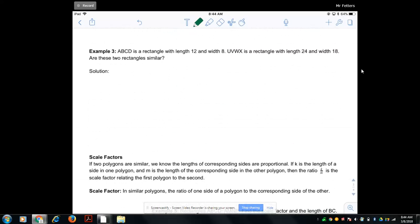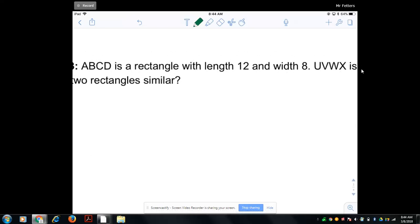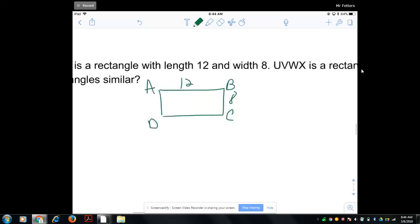Example number three. ABCD is a rectangle with length 12 and width 8. UVWX is a rectangle with length 24 and width 18. Are these two rectangles similar? If you're not quite sure, it's always easy just to make a little drawing. So here is A, B, C, D. The length is 12 and the width is 8.